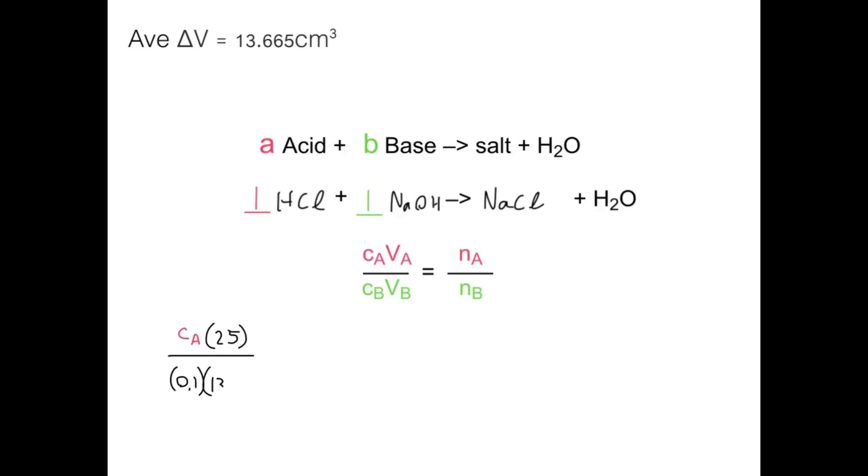So that means it's 13.665, like so. And that is equal to the number of moles of our acid, which is a - so that's one - over the number of moles of our base, which is one. Now we can go and do some manipulation. We can conclude that 25 Ca - so 25 of Ca - is equal to, and since this side simplifies to one, we can just go 0.1 times 13.665, which will give you 1.3665.